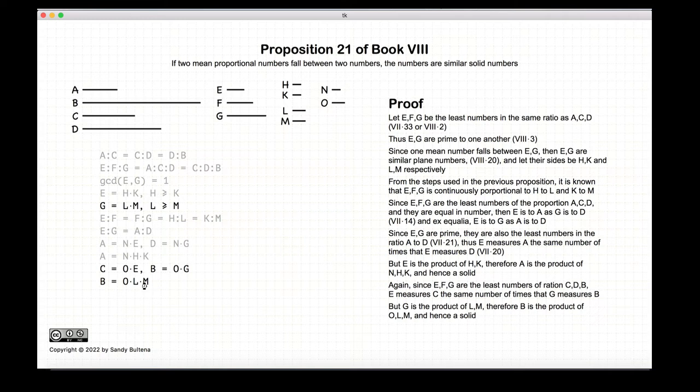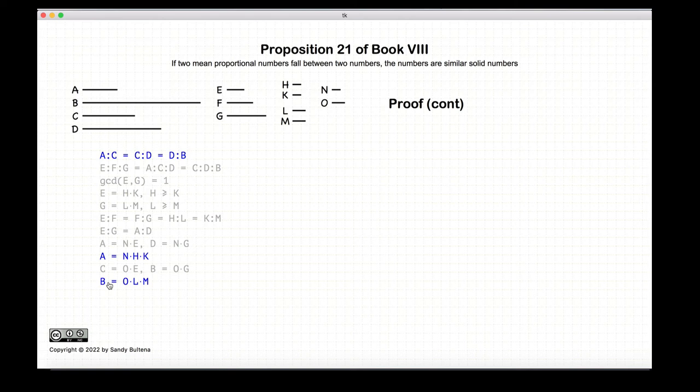So we have just demonstrated the first part of this proof, that a and b are solid numbers. But we still need to prove that they are similar solid numbers.